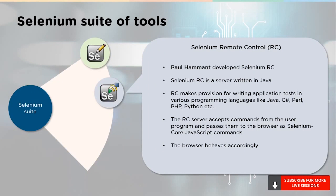Next up, we have Selenium Remote Control. RC was developed by Paul Hammond and is a server written in Java. RC makes provision for writing application tests in various programming languages, be it C-sharp, Perl, PHP, Python, etc. The RC server accepts commands from the user program and passes them to the browser as Selenium core JavaScript commands.